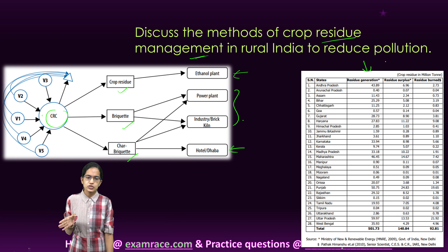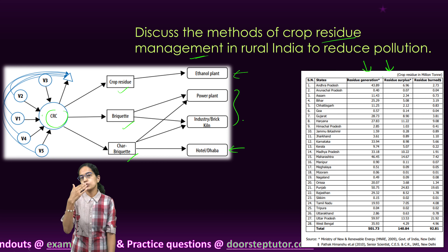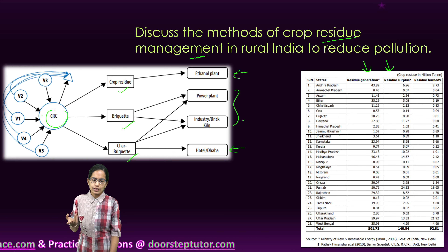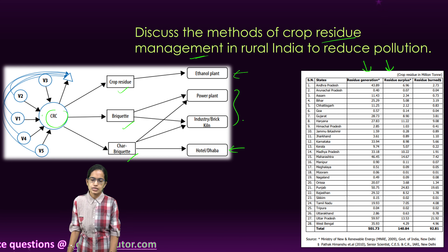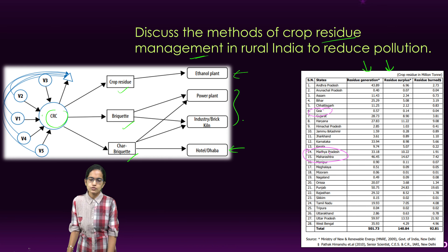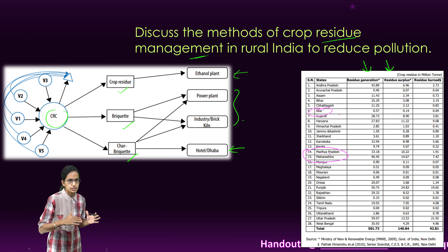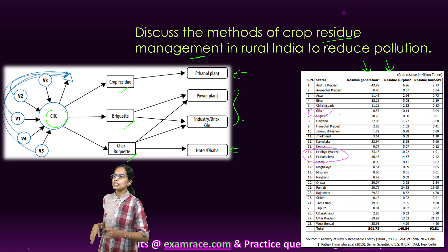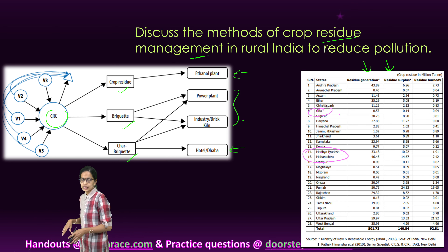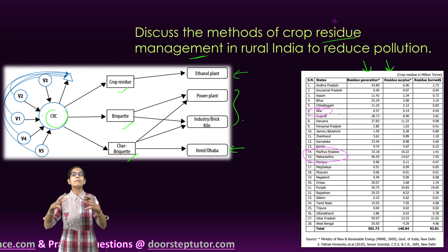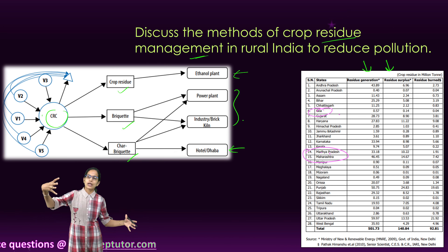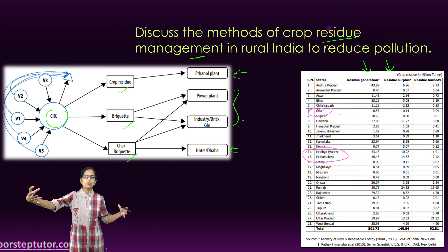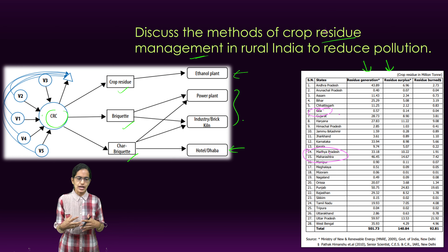Here is the amount of residue generated and the surplus residues across states. While writing your answers, pick some states which have higher values in contrast to states which have significantly lower values, and compare and contrast the results. Using data and statistics does not mean writing the whole state-wise analysis — just give a compare-and-contrast picture with extreme values on each end.